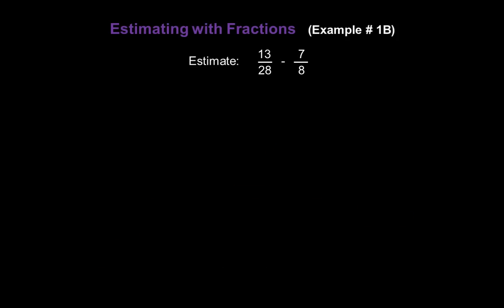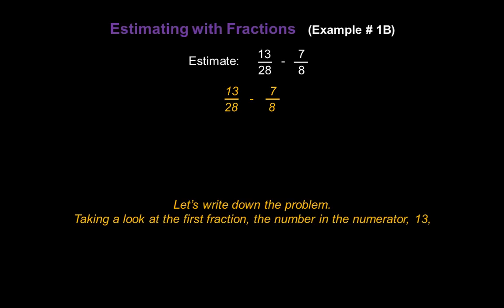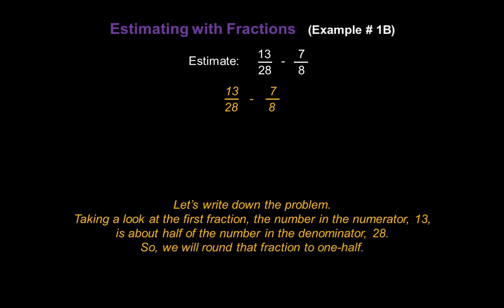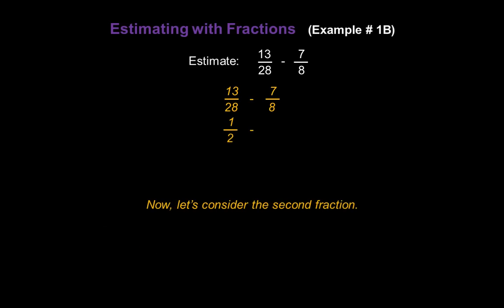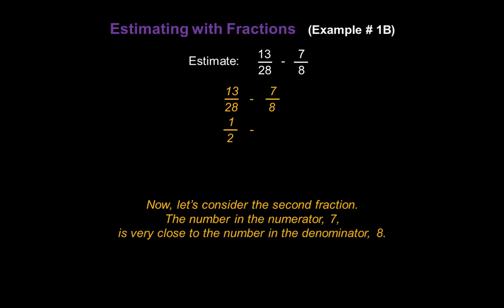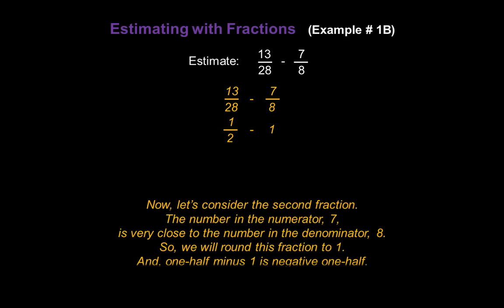Now let's estimate 13 over 28 minus 7 over 8. Taking a look at the first fraction, the numerator 13 is about half of the denominator 28, so we're going to round that fraction to 1 half. Now let's consider the second fraction: the numerator 7 is very close to the denominator 8, so we're going to round 7 over 8 to 1. We just subtract: 1 half minus 1 is negative 1 half. So that's the answer for our estimate.